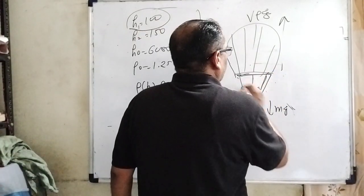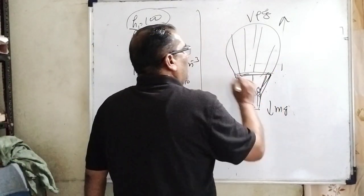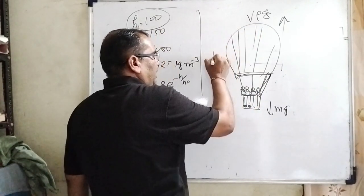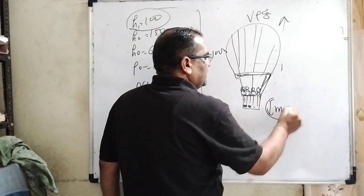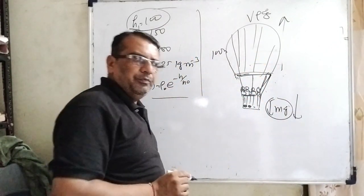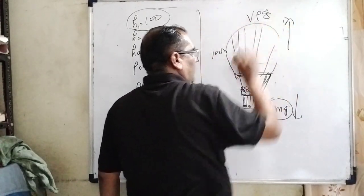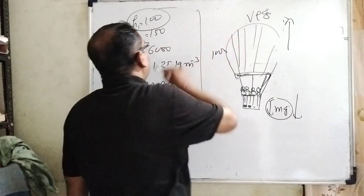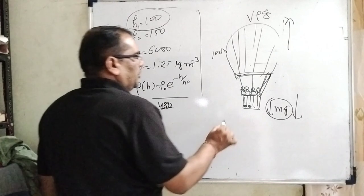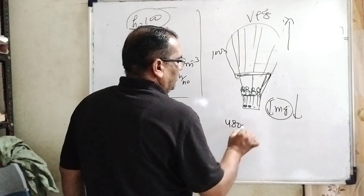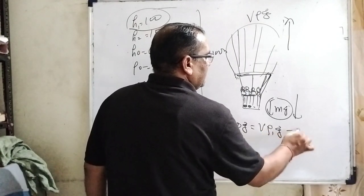In this question, we have a balloon carrying passengers at a certain height of 100 m. It is in balance. What does this mean? It means mg acts in the downward direction and the upthrust force, or buoyancy, acts in the upward direction. The weight is 480 kg. So 480g = Vρ₁g. This is the first case.